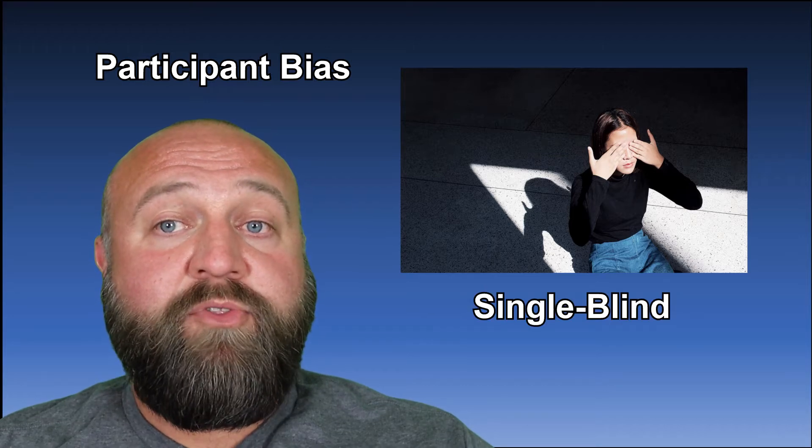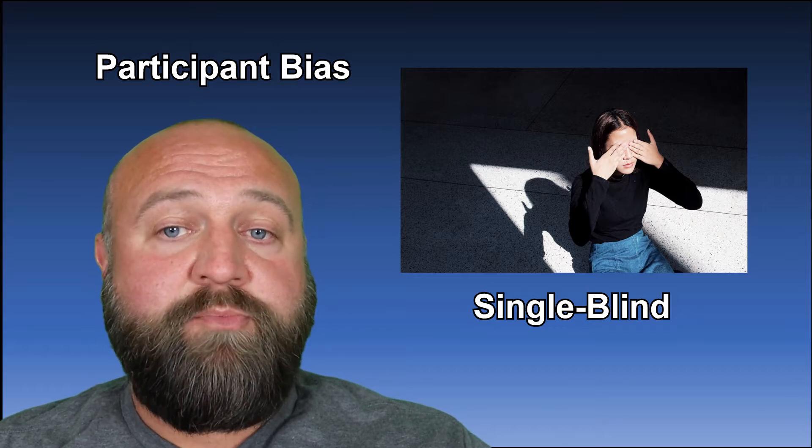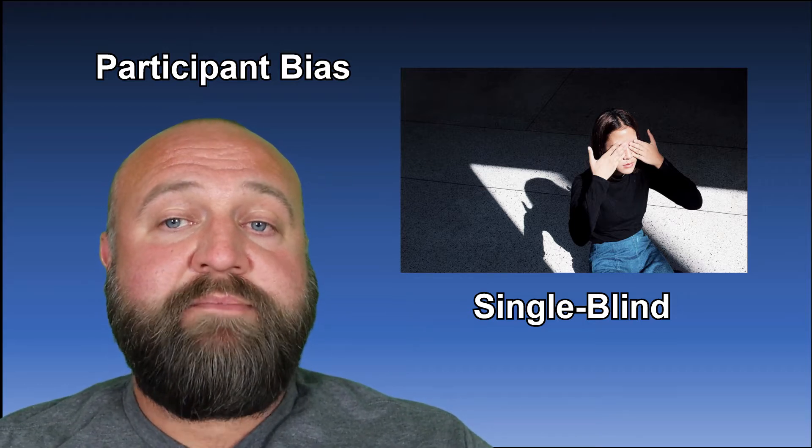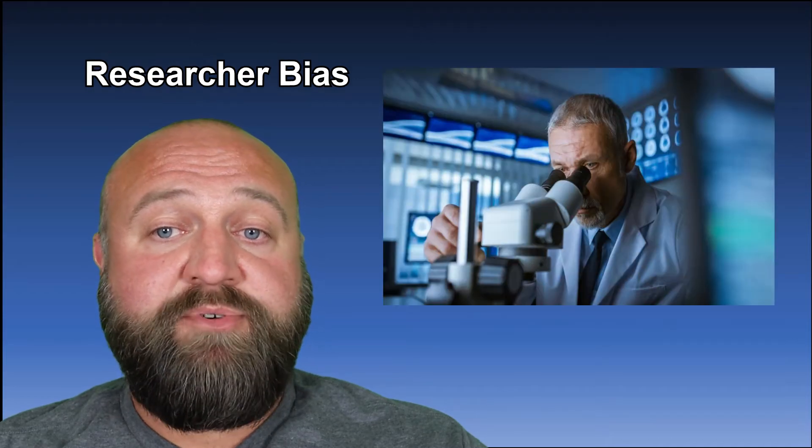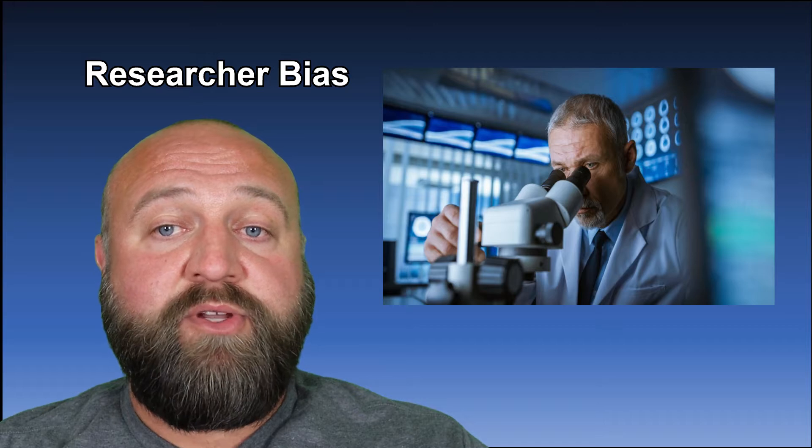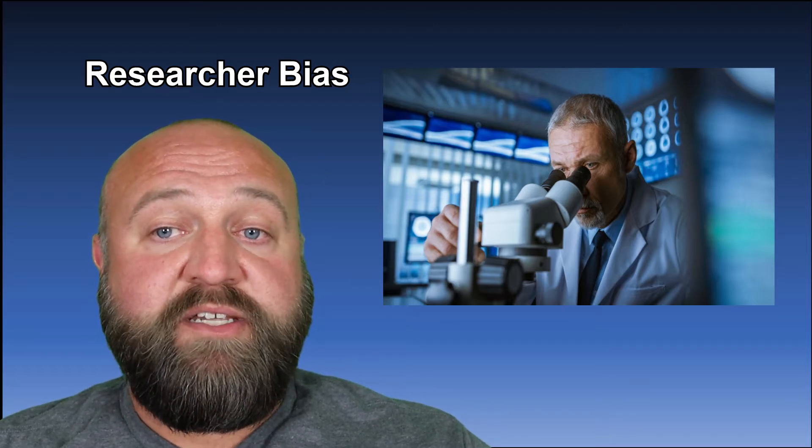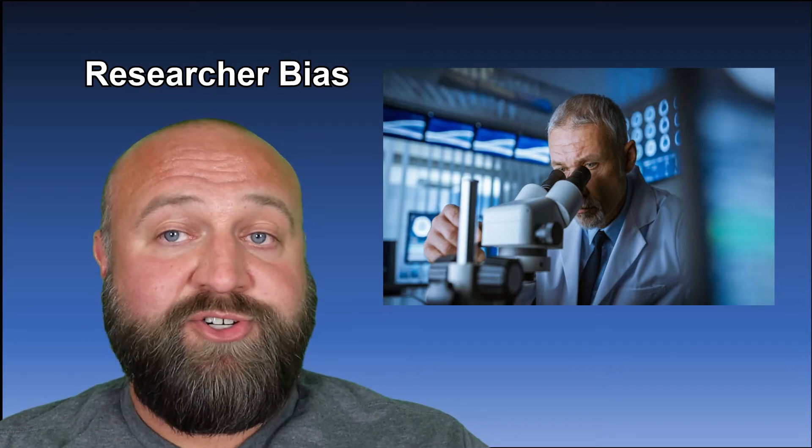However, the researchers do know which group the participants are in and this can be its own problem. Sometimes researchers themselves can have their own biases, assumptions, hopes, and beliefs. Sometimes this can interfere with those researchers interacting with the participants and can cloud their judgment. We call this researcher bias.